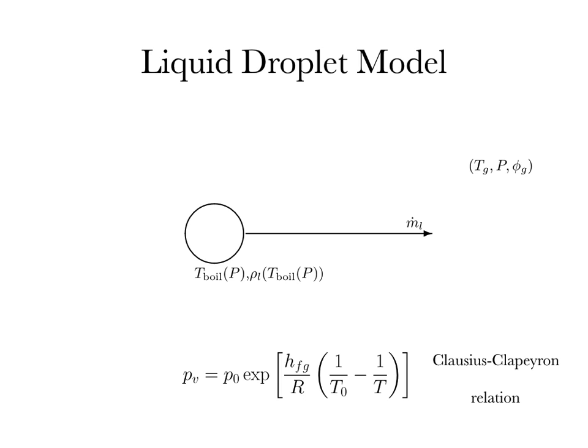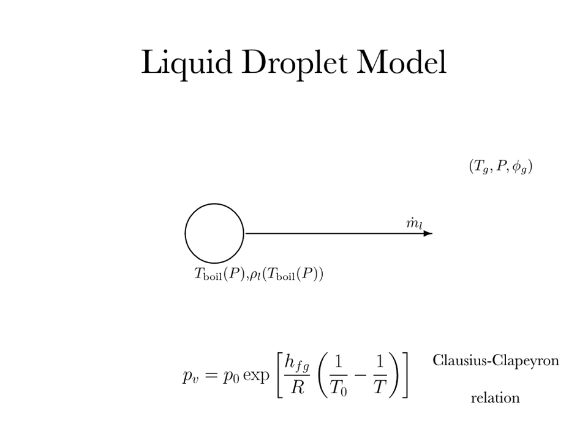We also have rho_L, which characterizes the liquid droplet — the density in the liquid phase. Also note in the Clausius-Clapeyron relation we have H_FG, which is the latent heat of vaporization: the energy or heat required to bring one molecule of our fuel from the liquid phase into the gas phase.